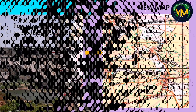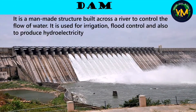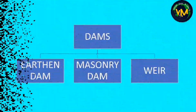Next we move on to dams. A dam is a man-made structure built across a river to control the flow of water. Dams are mainly used for irrigation, flood control, and to produce hydroelectricity. There are three types of dams: earthen dam, masonry dam, and weir.